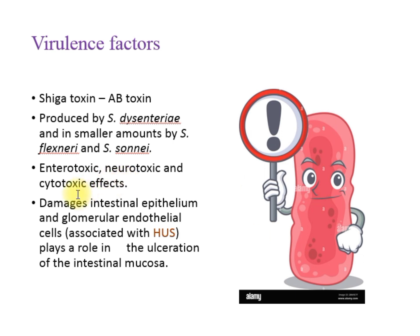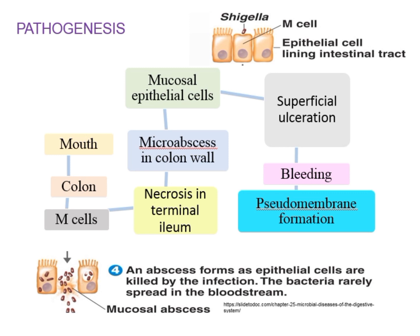The enterotoxic activity is associated with watery diarrhea and loss of electrolytes like sodium. The cytotoxic activity is associated with damage to the intestine and damage to renal cells, specifically the glomerular endothelial cells, hence it also causes HUS (hemolytic uremic syndrome). It also causes ulceration of the intestinal mucosa.